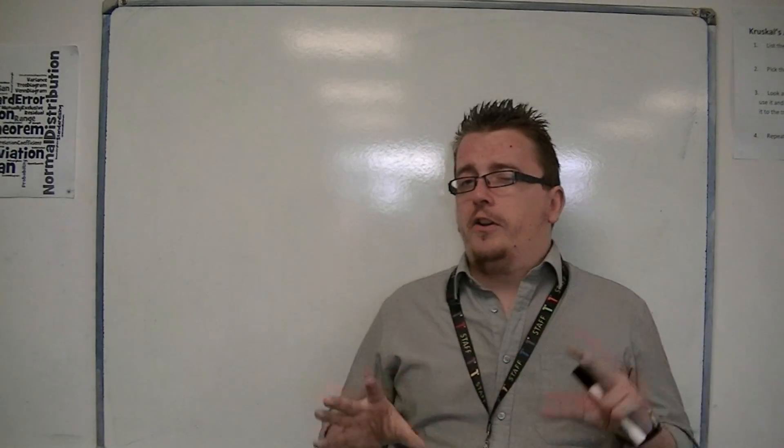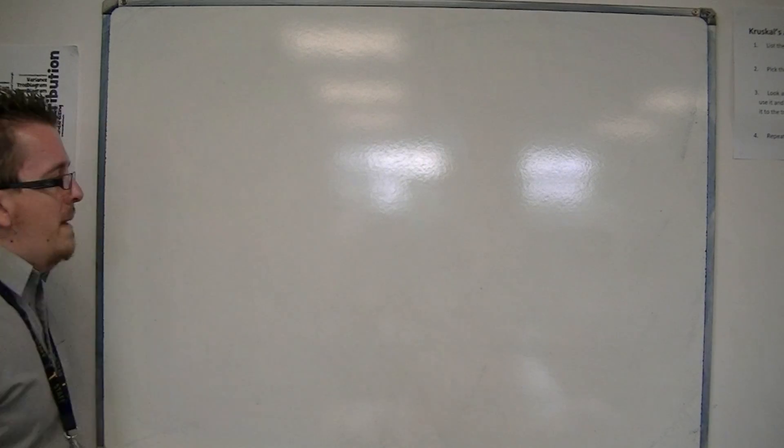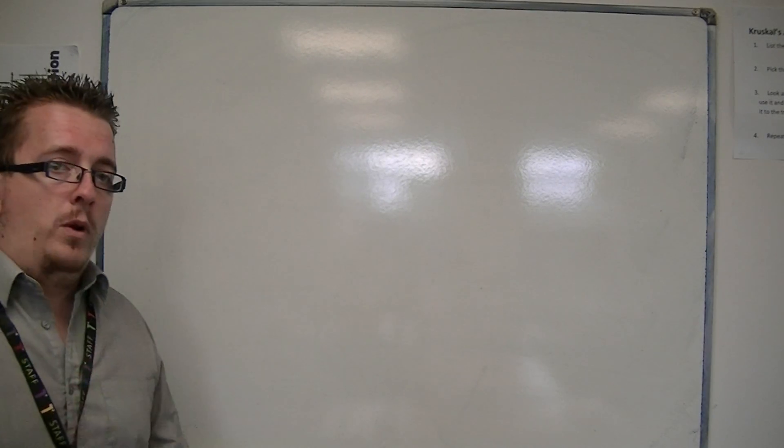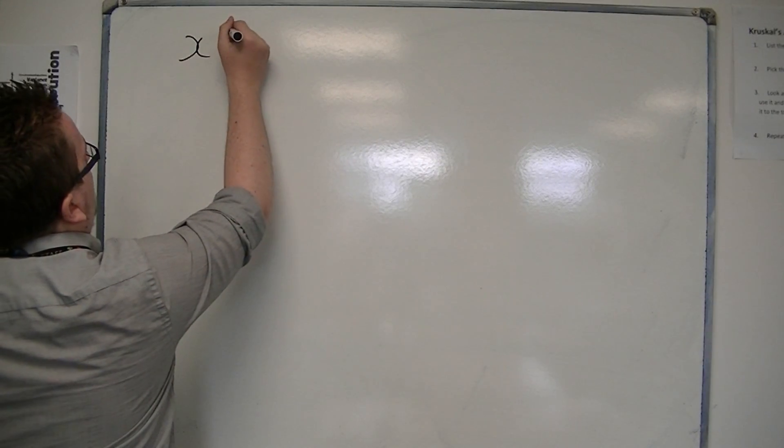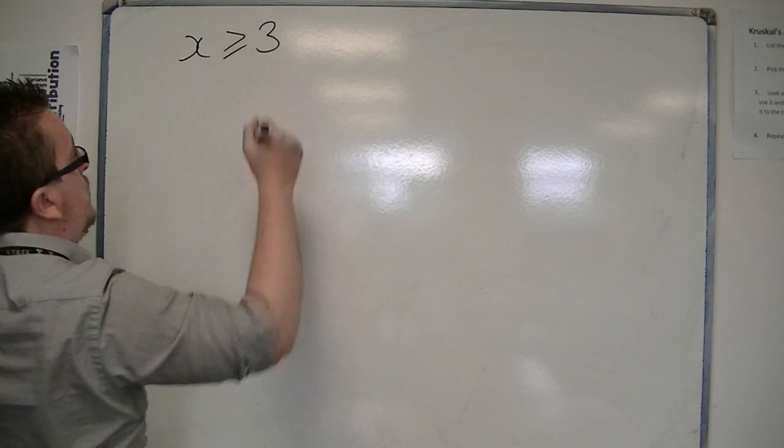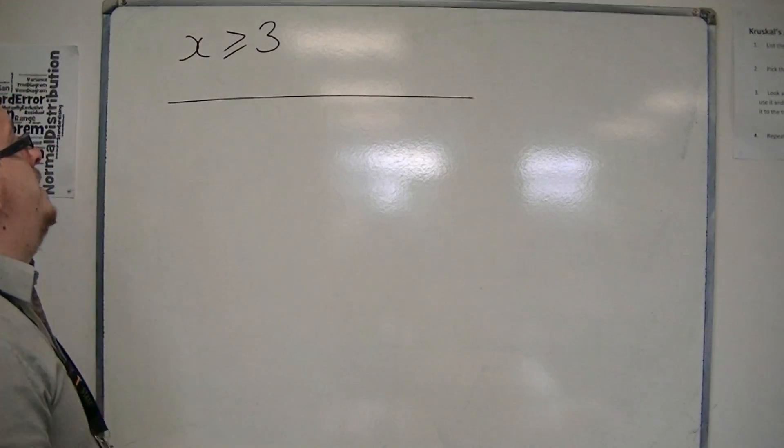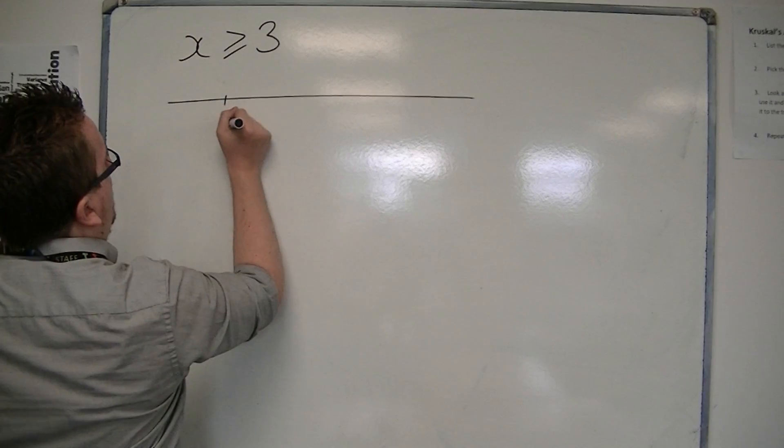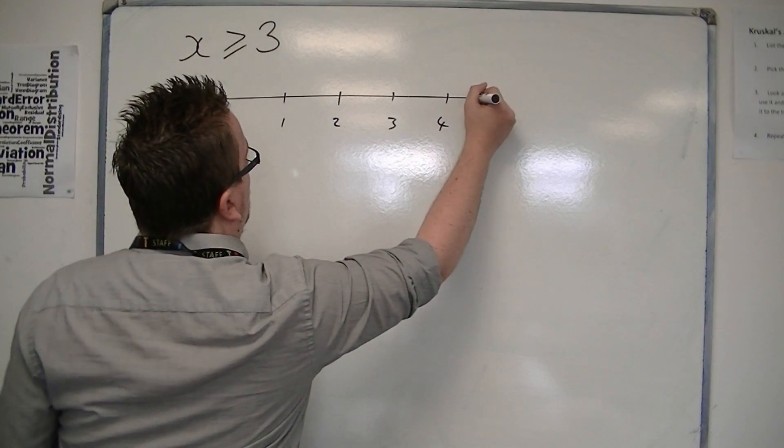So just to start us off with inequalities, remember with inequalities we have the inequality symbols. So if I'm saying x can be greater than or equal to 3, then this can be represented on a number line. So that we have 0, 1, 2, 3, 4, etc.